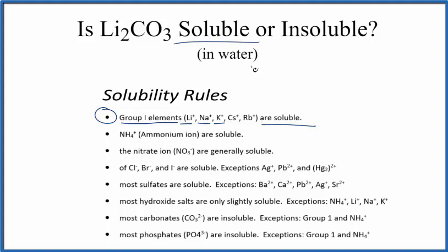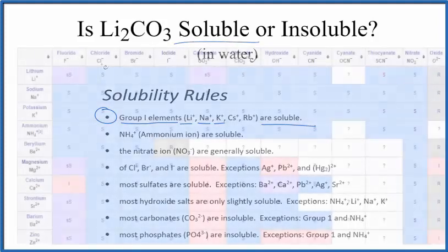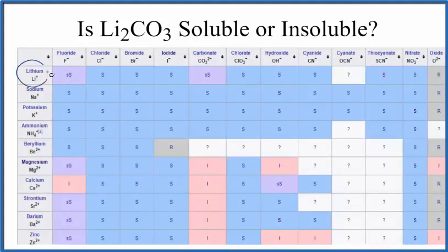But let's take a look at the solubility table just to check that. So we find lithium here. That's Li+ that forms a lithium ion and carbonate, CO3 two minus. Right here's the carbonate. So we go across and we go down and we see SS.